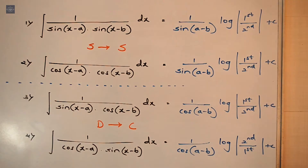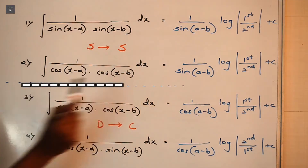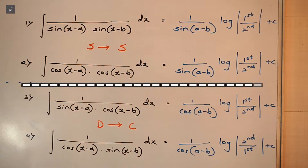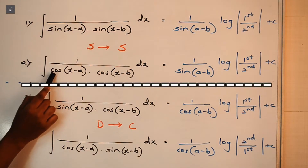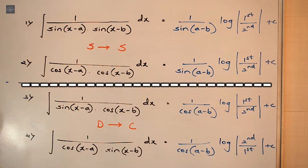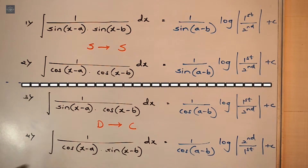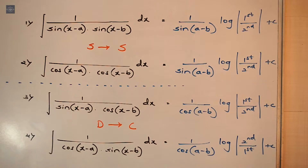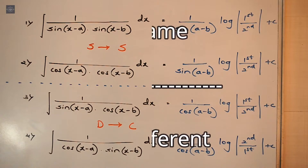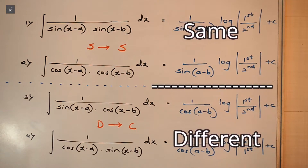Alright guys, in all these questions we divide into two categories. In the first category we have got the same terms in the denominator — either one upon sin times sin, or one upon cos times cos. In the second category we have got different terms in the denominator.